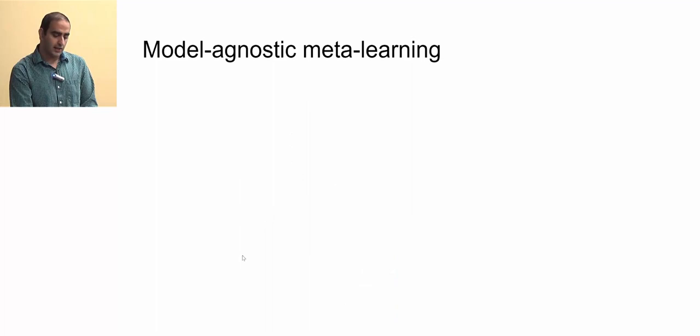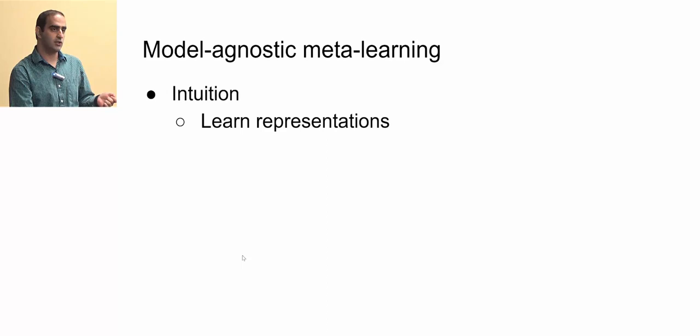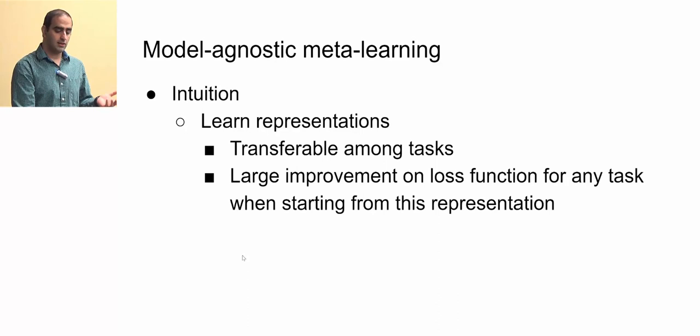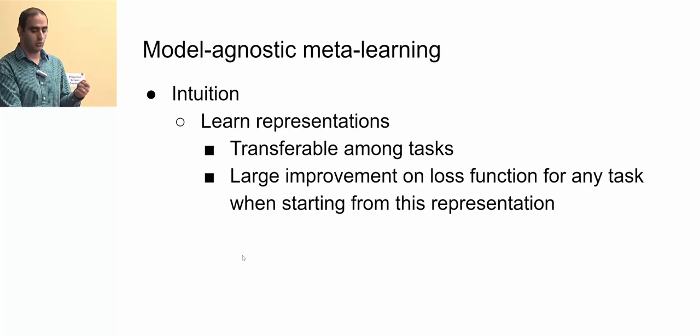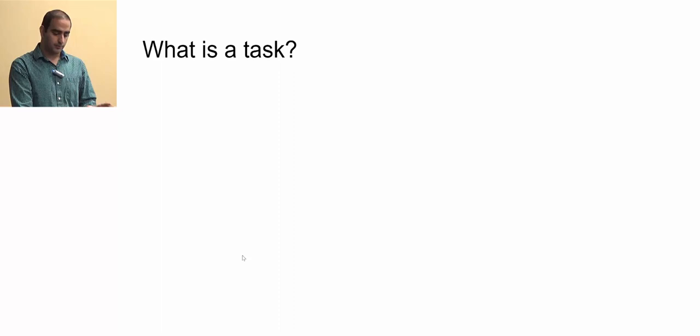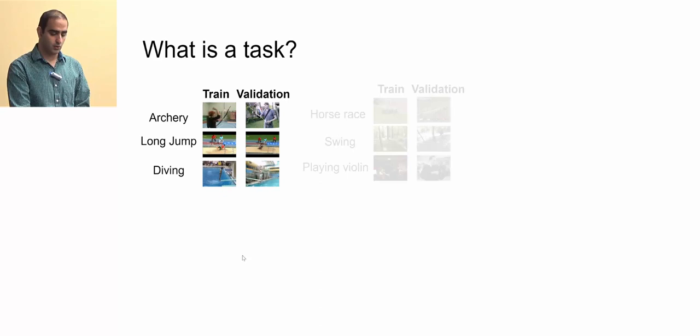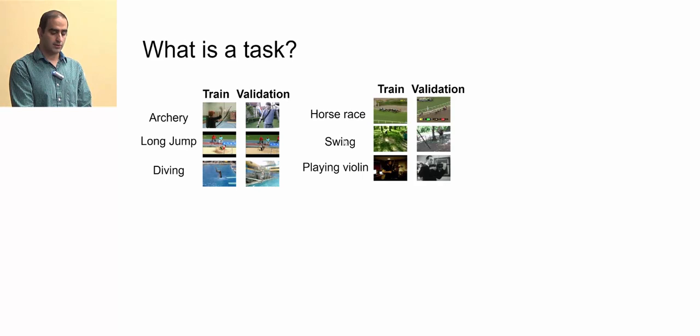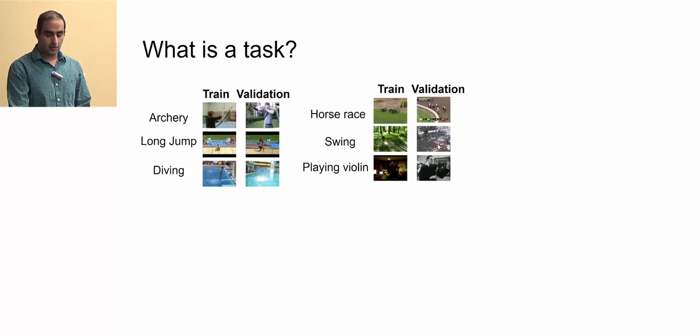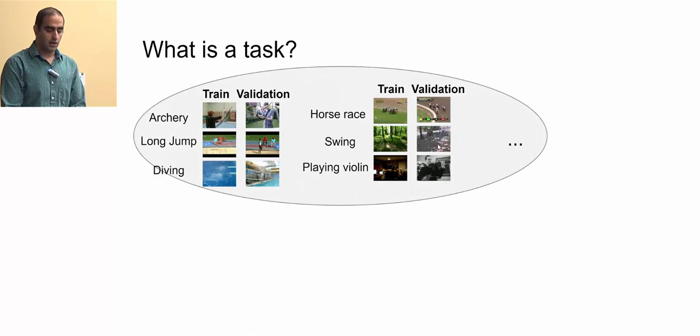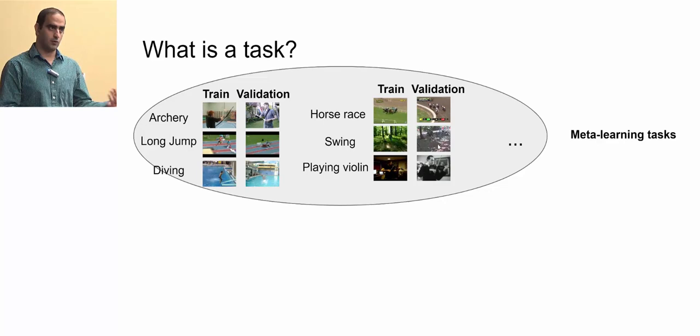I will now talk about model-agnostic meta-learning. The intuition is that we want to learn representations which are transferable among tasks, and those representations should give large improvement on the loss function of any particular task when we start from that representation. A task has a train and validation set. We can generate as many tasks as we want and put them all in a set called the meta-learning task set.